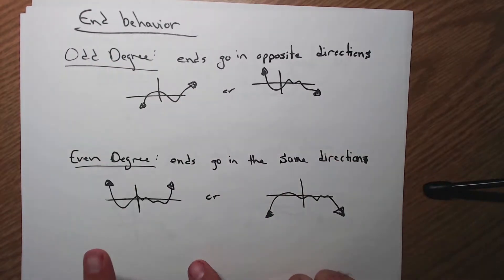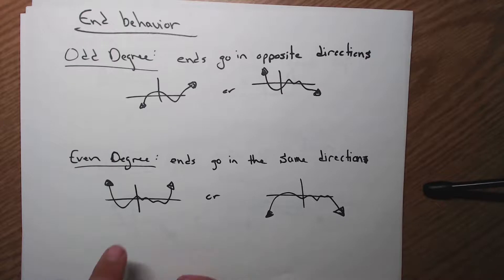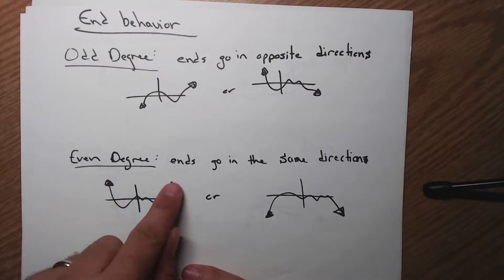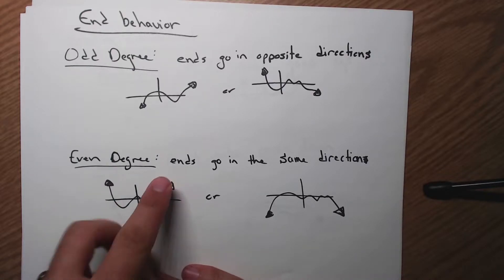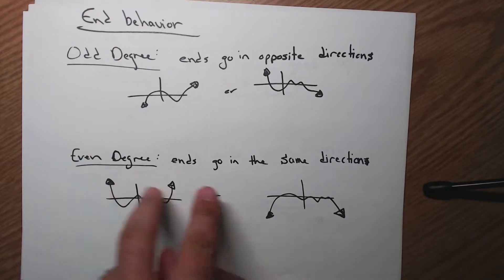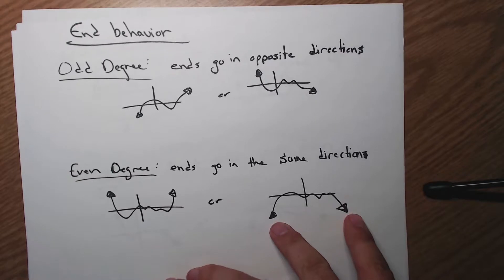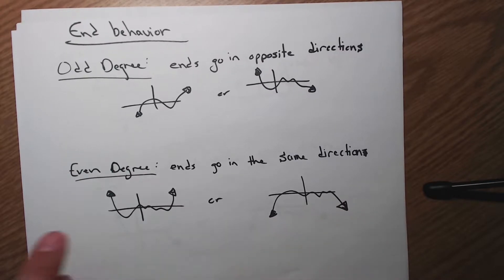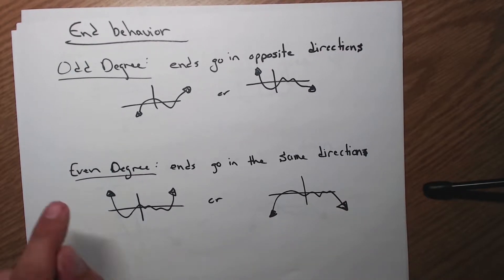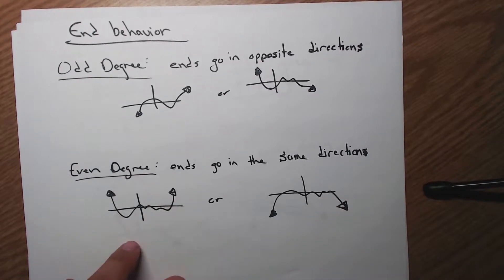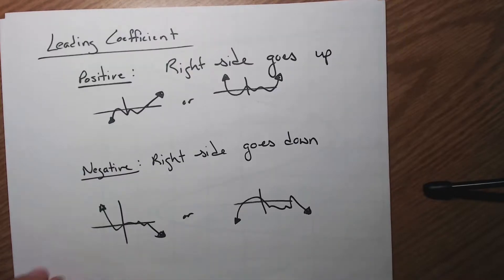If the degree is even, think about x squared — a parabola. Both ends go in the same direction, whether they both go up or both go down. They will definitely both go in the same direction, and that's an important feature.